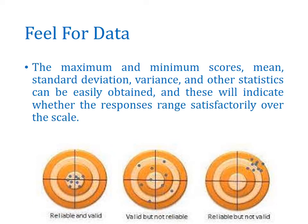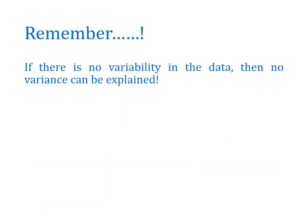Feel for data: the maximum and minimum scores, mean, standard deviation, variance, and other descriptive statistics can easily be obtained. These will indicate whether the responses range satisfactorily over the scale or not. If the data is mostly invalid — if there is a problem in your data collection, scales, or items — you need to recheck all steps regarding data collection and development of the questionnaires, including wording, the principle of measurement, principle of wording, and the principle of appearance of your questionnaires.